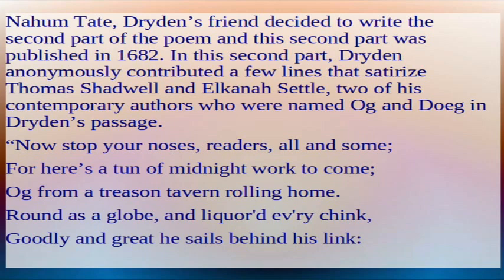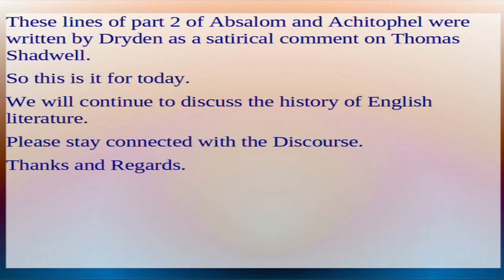'Now stop your noses, readers, all and some, for here's a tun of midnight work to come. Og from a treason-tavern trolling home, round as a globe, and liquored every chink, goodly and great he sails behind his link.' These lines from the second part of Absalom and Achitophel were written by Dryden as a satirical comment on Thomas Shadwell.